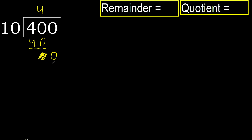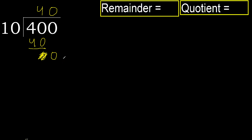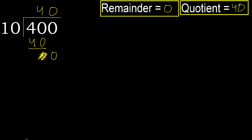There is no more number, therefore finish it. Complete — always complete with 0. Because here we finish with this number. Therefore 400 divided by 10 is 40.